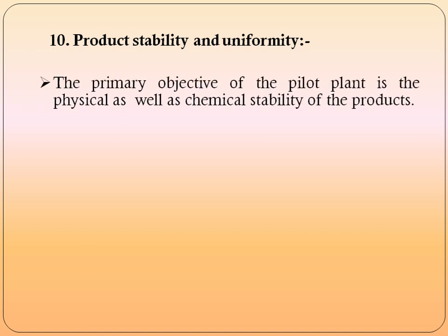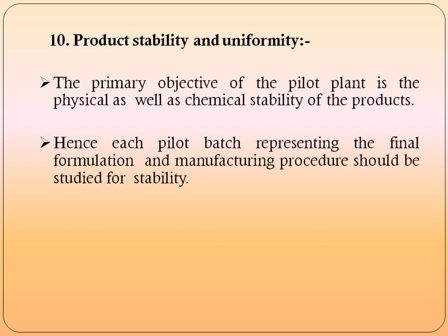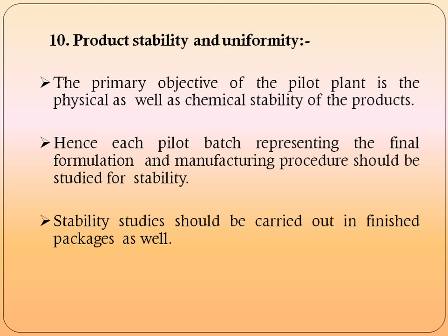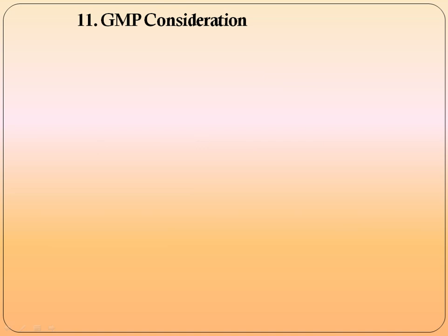Product stability and uniformity: the primary objective of the pilot plant is physical and chemical stability of the product. Each pilot batch representing a final formulation and manufacturing procedure should be studied for stability. Stability studies should be carried out in the finished package to determine how long the formulation remains stable — allowing calculation of expiry date through stability or accelerated stability studies. Stability studies can also be performed on the finished product after completion of the production process.